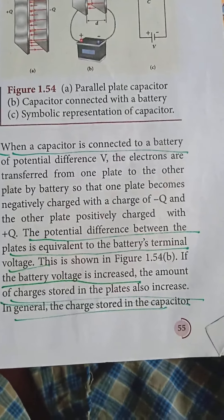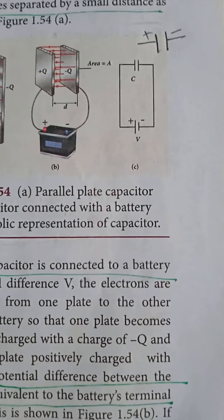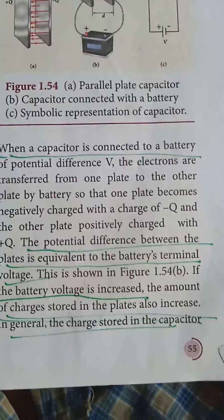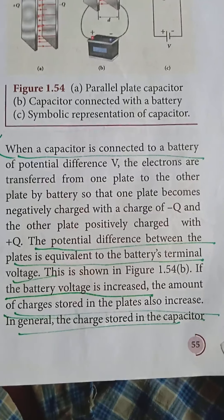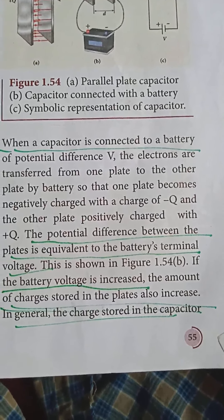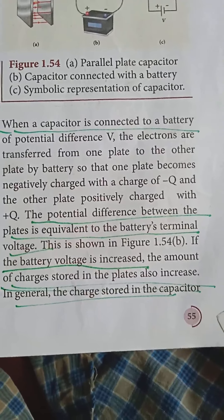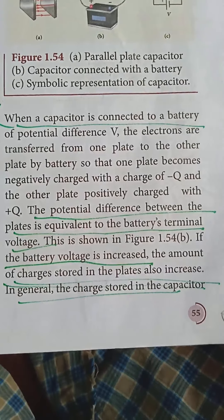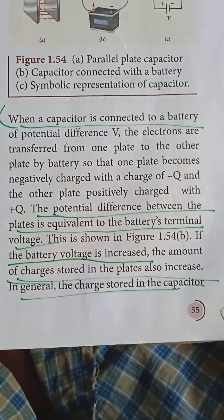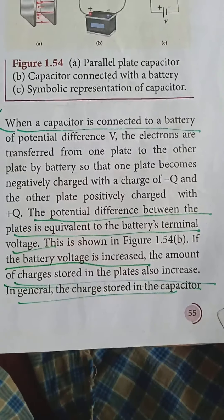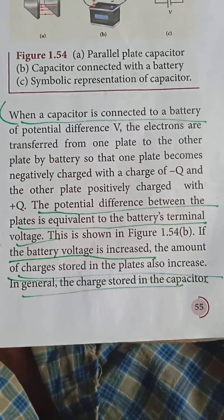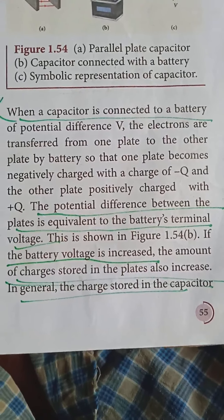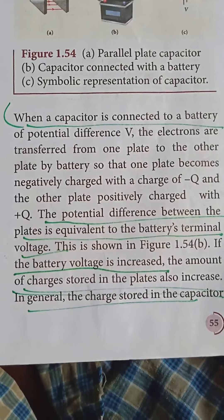When a capacitor is connected to a battery of potential V, electrons are transferred from one plate to another by the battery, so that one plate becomes negatively charged with charge −Q and the other plate is positively charged with charge +Q. The potential difference between the plates equals the battery terminal voltage. If the battery voltage is increased, the amount of charge stored in the plates also increases.